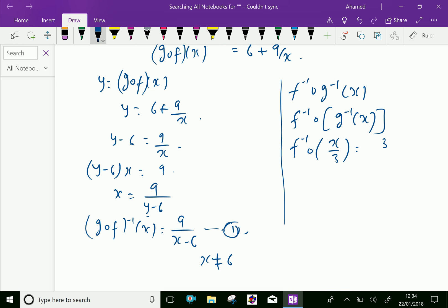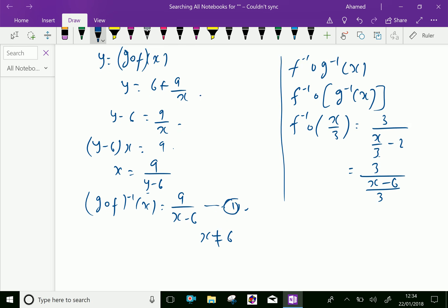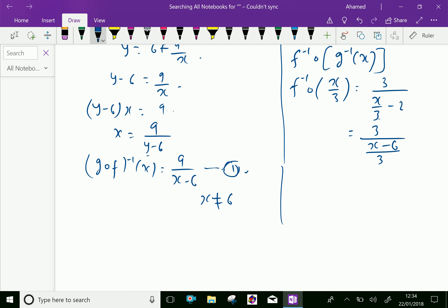That is 3 over x by 3 minus 2, which is equal 3 over LCM is 3, x minus 2 into 3 is 6. By reciprocal, we get f inverse of x over 3 is equal 3 into 3 is 9 over x minus 6.